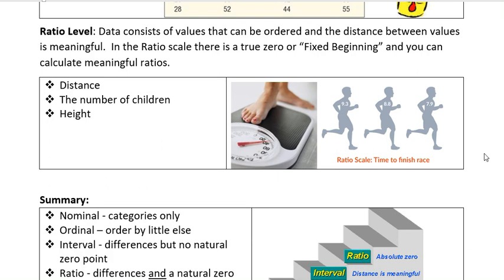...which has an absolute zero. It consists of values that can be ordered. The distance between the values is meaningful, there is a true zero, and you can calculate meaningful ratios.